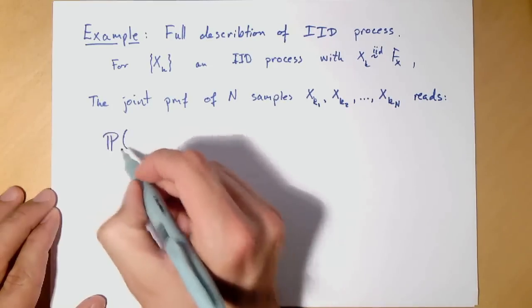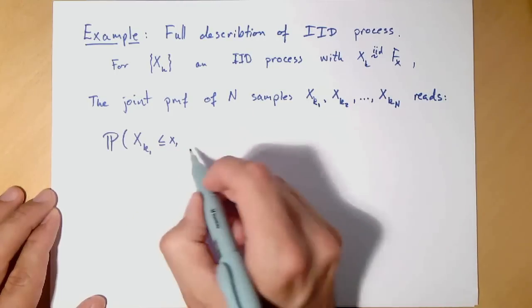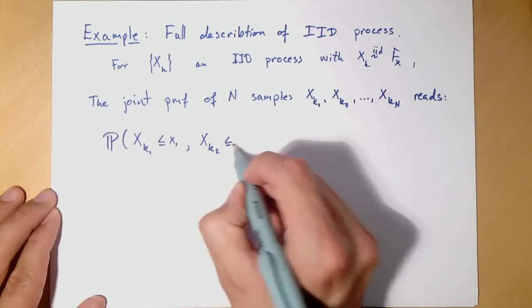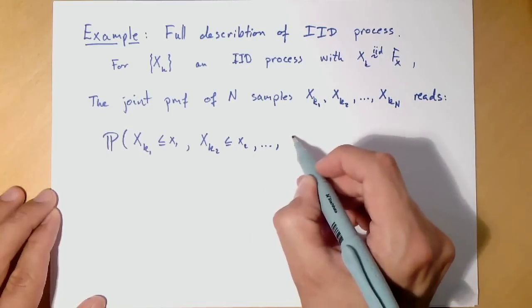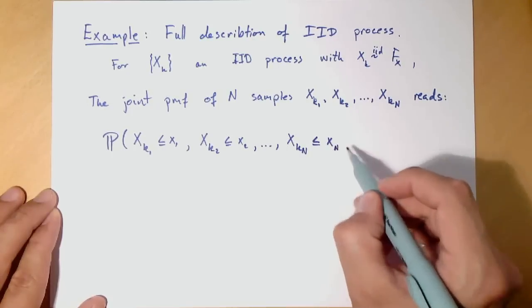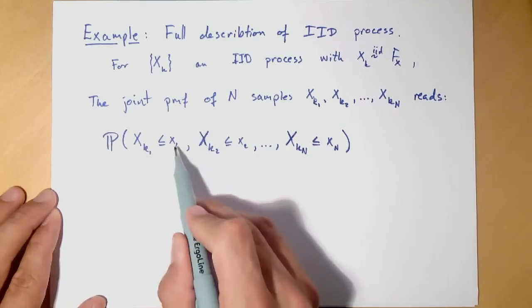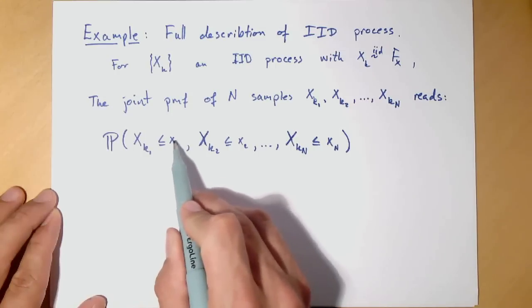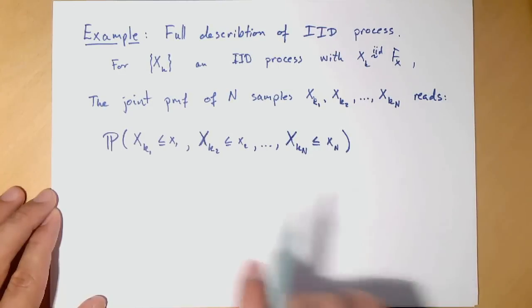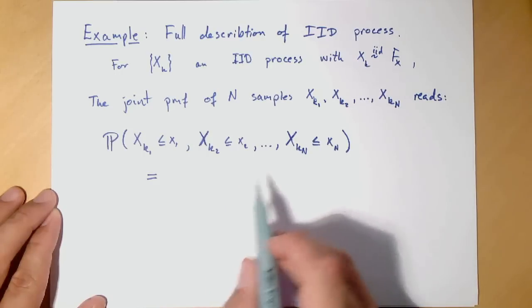And we can write up now the joint probability mass functions of n samples. So that would be probability that x_k1 is less than or equal to x1, x_k2 less than or equal to x2, etc., up to x_kn less than or equal to xn. It can be a bit difficult to see the differences between random variables with capital letters and small parameters for the probability mass functions with lowercase letters.